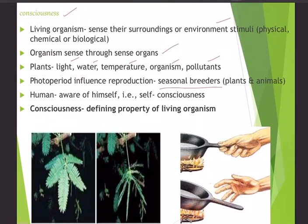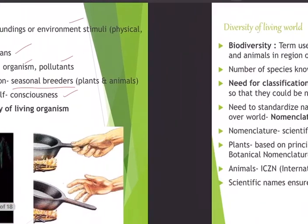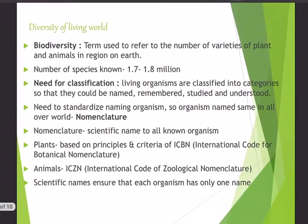Photoperiod influences reproduction, so we have seasonal breeders in both plants and animals that breed only during particular seasons. Humans are aware of not only themselves but their surroundings — what we call self-consciousness. Consciousness, expressed through sensation of touch, smell, vision, and hearing, is the defining property of living organisms.